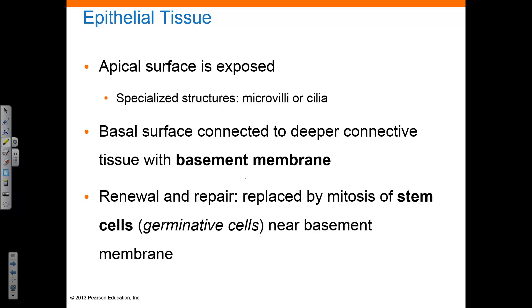The apical surface of the epithelial tissue is the side exposed to either the internal or external environment. The cell surface may have microvilli to increase surface area, or cilia to encourage the movement of materials over the cells. The basal surface connects to deeper connective tissue at the basement membrane, which is the site of attachment for epithelial tissue to deeper tissues. Stem cells found near the basement membrane undergo mitosis to produce new epithelial cells, repairing the epithelium by replacing cells lost to or damaged by the environment.